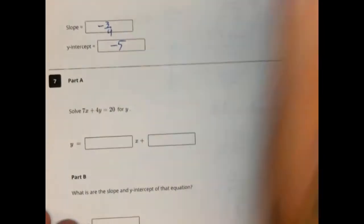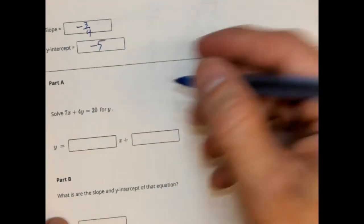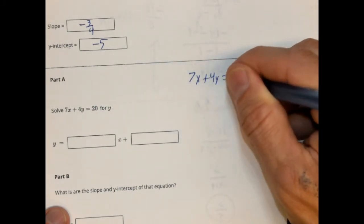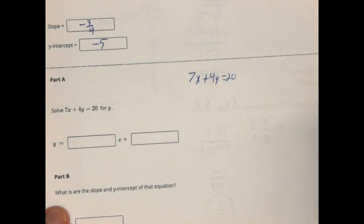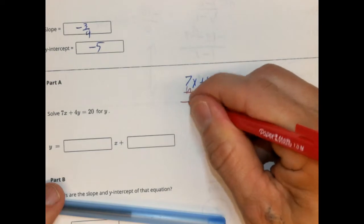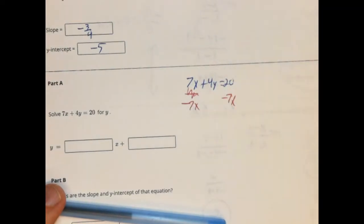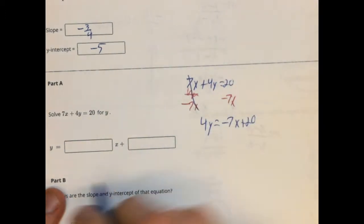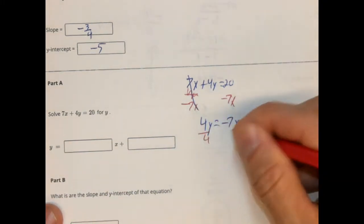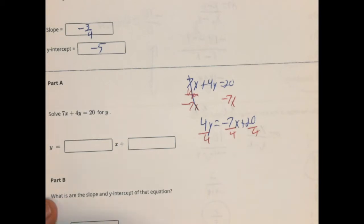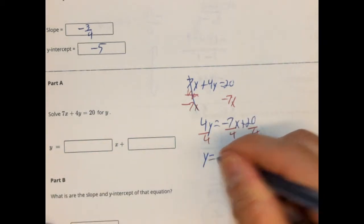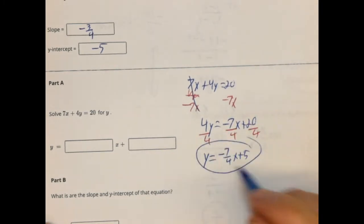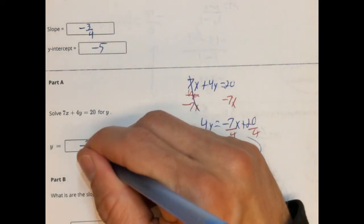And let's solve for y — we want to get y by itself, putting this in slope-intercept form. The equation is 7x plus 4y equals 20. To solve for y, first we're going to subtract 7x from both sides. That cancels, so we have 4y equals negative 7x plus 20. Now we're going to divide by our coefficient, which is 4. So we're going to have y equals negative 7 fourths x plus 5.